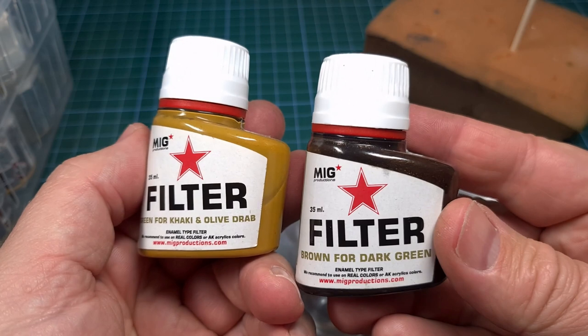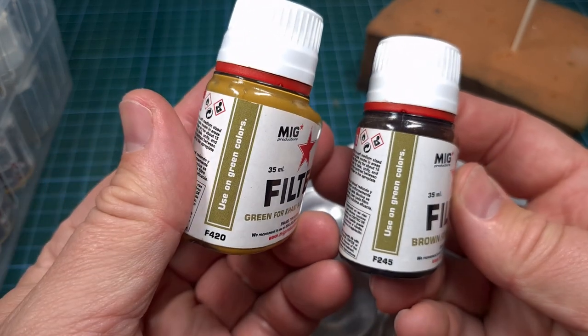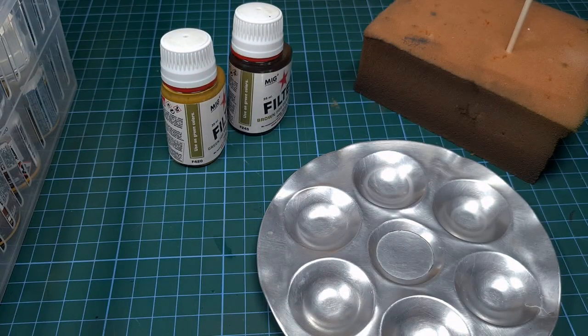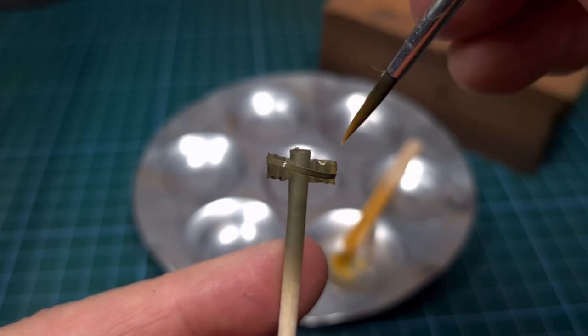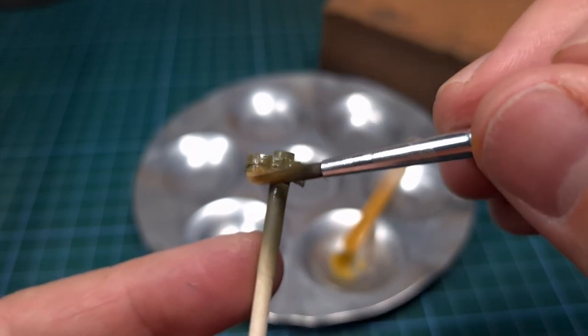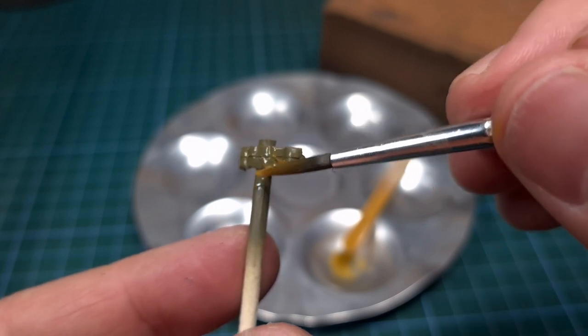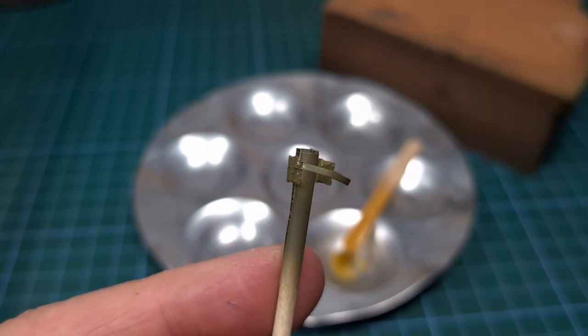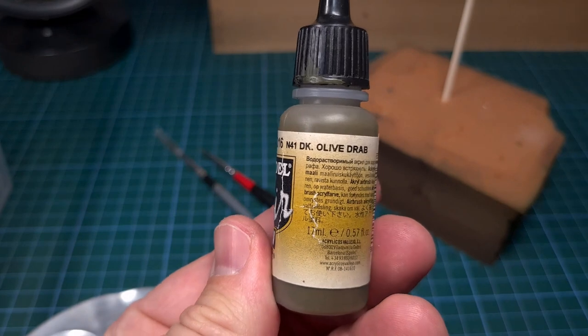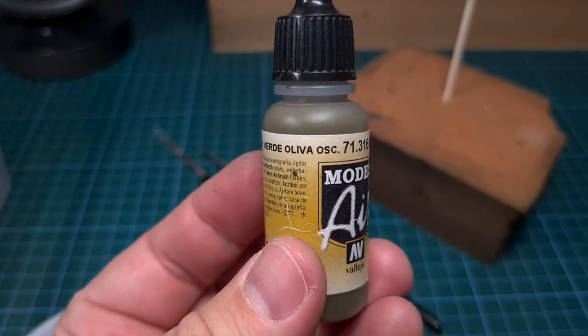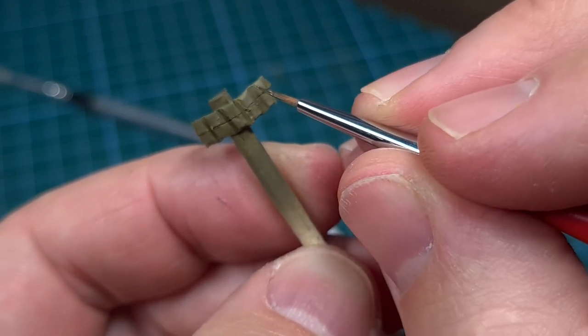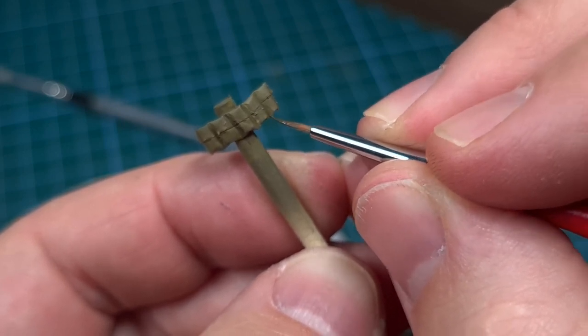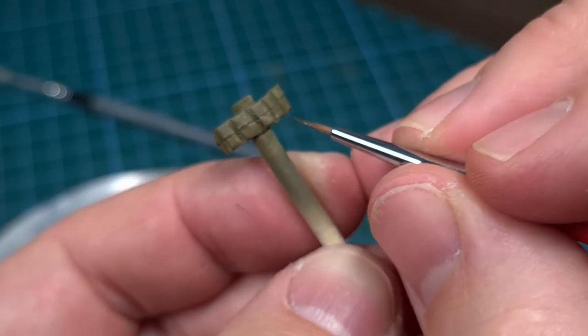Now with this done we can start some detailing. I'll be using these filters from MIG Productions. One being green for khaki olive drab and the other one being brown for dark green. This is very much like a wash. You apply this and it will flow into all the crevices, all the recessed detail. The first one being the lighter color and then followed up with the darker color. Next I'm going to use some dark olive drab and I'm going to brush paint this into all the seams and the recessed areas between every magazine pouch just to give some color contrast.